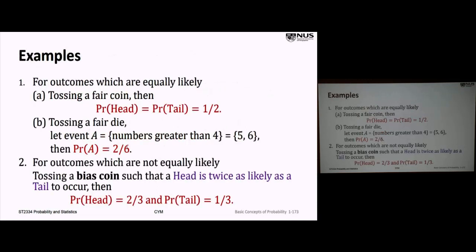Equally likely is a very special case. If you flip a fair coin, the probability of heads and tails are equally likely — there are only two outcomes, so the probability of each is one over two. If you roll a fair die, there are six possible outcomes, and the probability of any one of those six numbers landing is one over six.